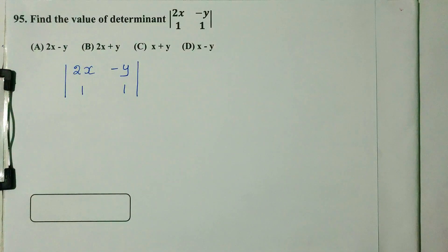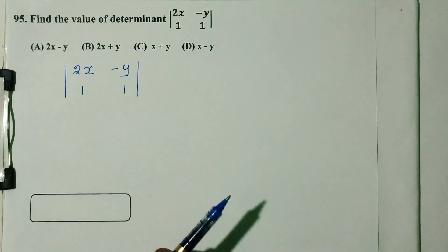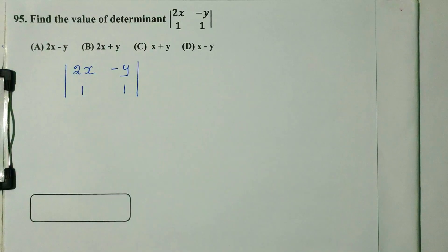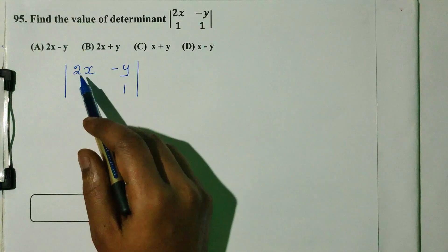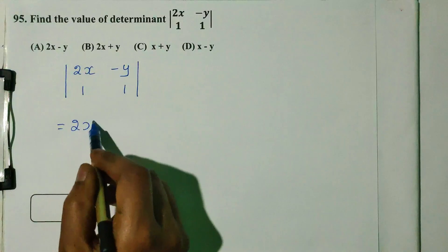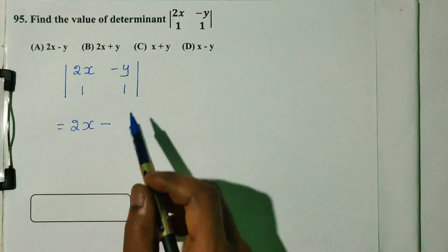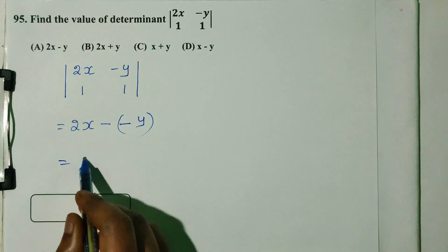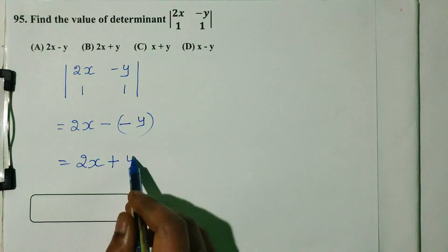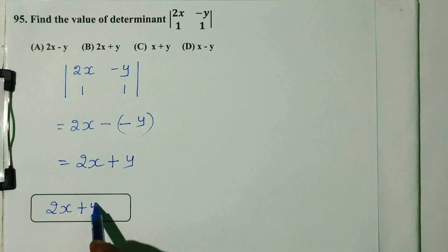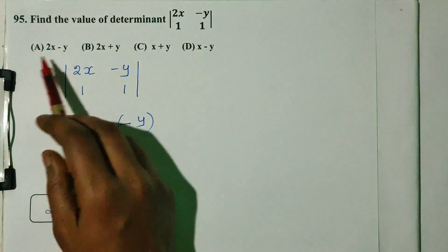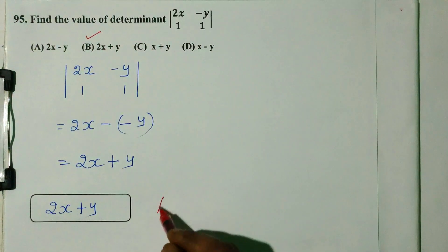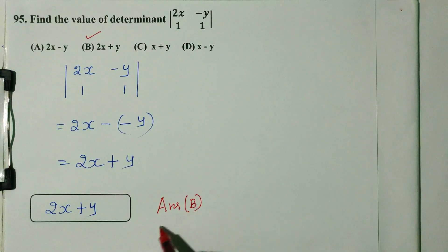Question number 95. Find the value of the determinant: [2x, -y; 1, 1]. The determinant formula is product of principal diagonal minus product of remaining elements. So: 2x×1 minus (-y×1) = 2x - (-y) = 2x + y. Option B is the right answer.